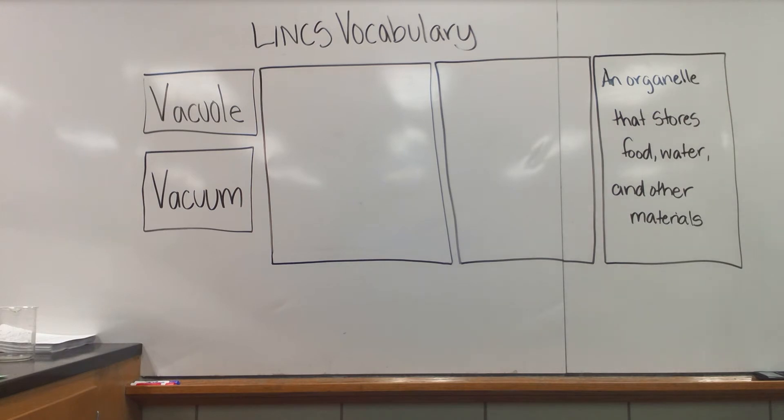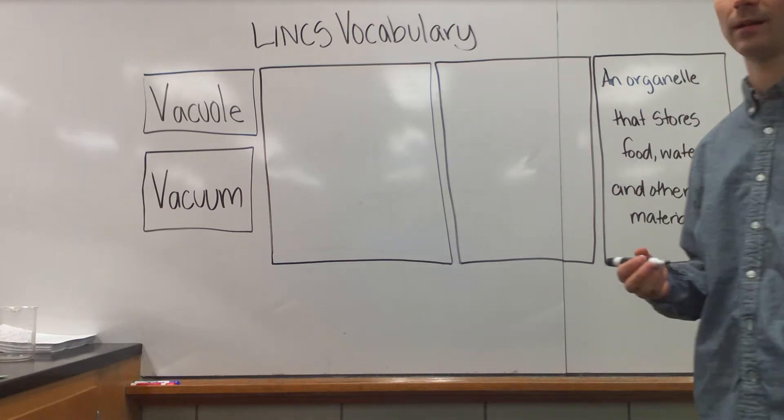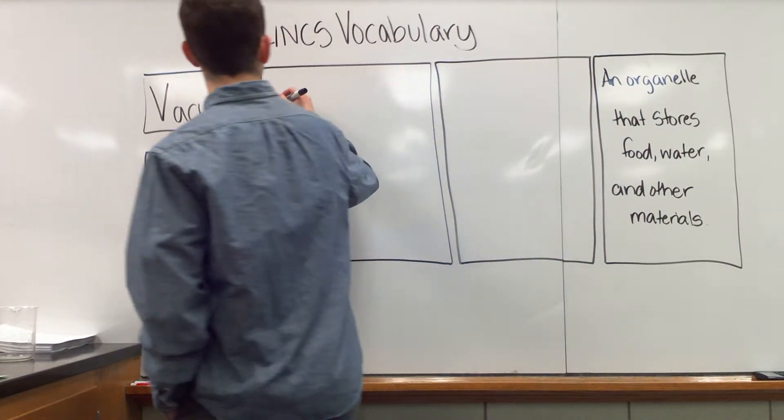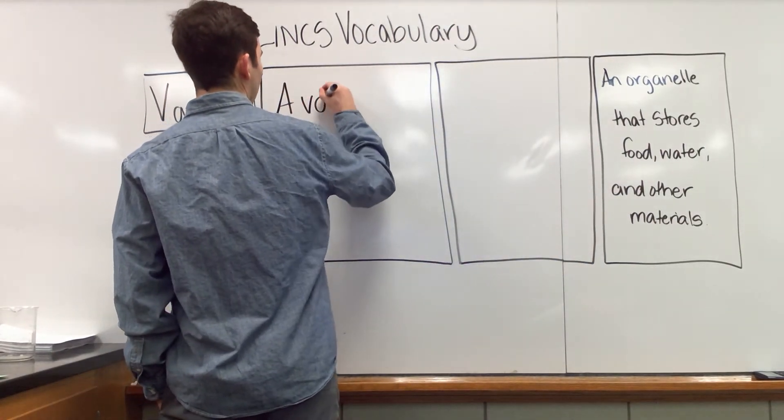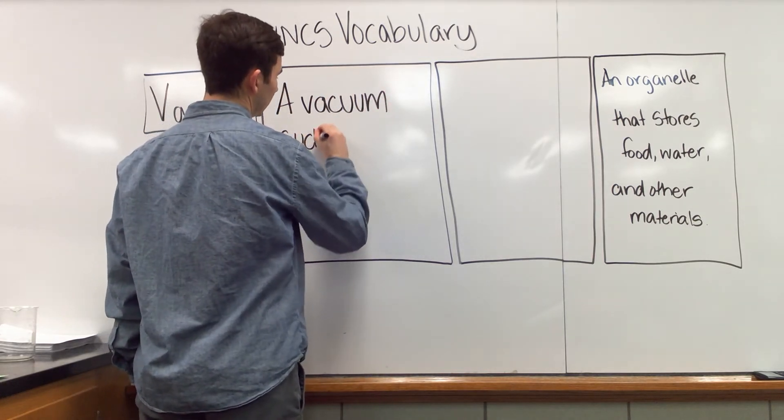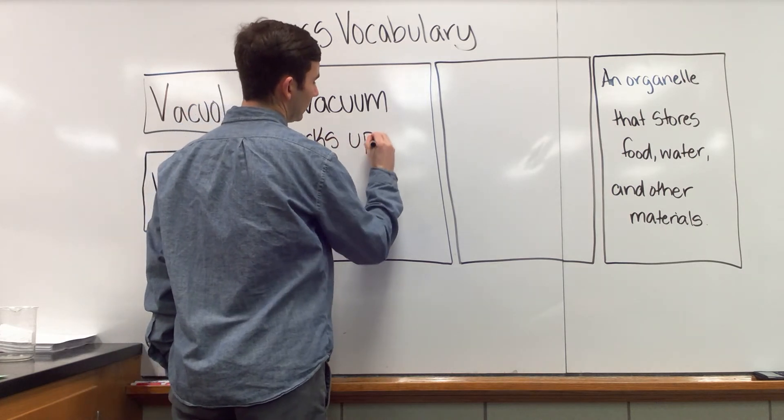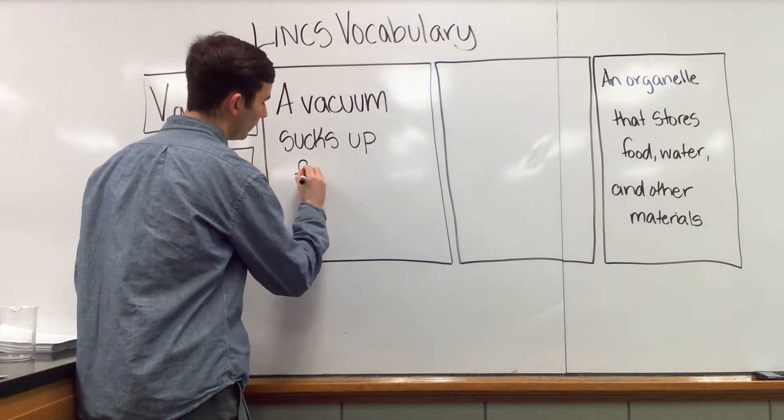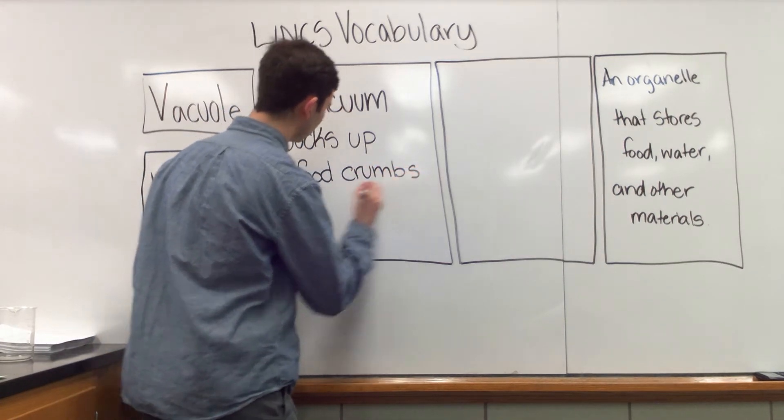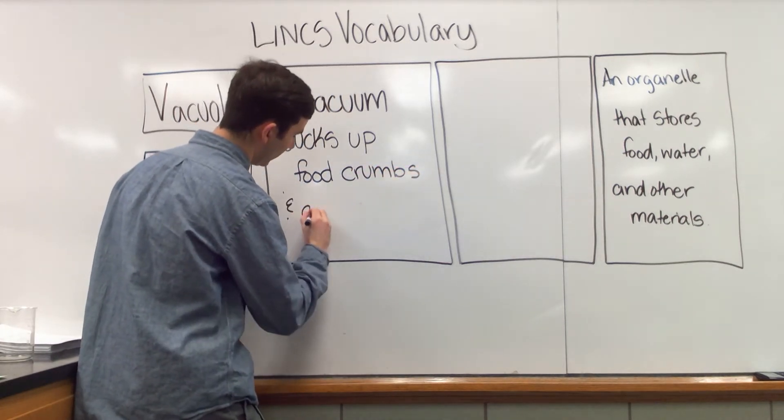Well, a vacuole is an organelle that stores food, water, and other materials. And a vacuum is something that sucks up food parts and cleans our house and might clean up water spills and other things that we find on the floor. So a vacuum sucks up food crumbs and other materials.